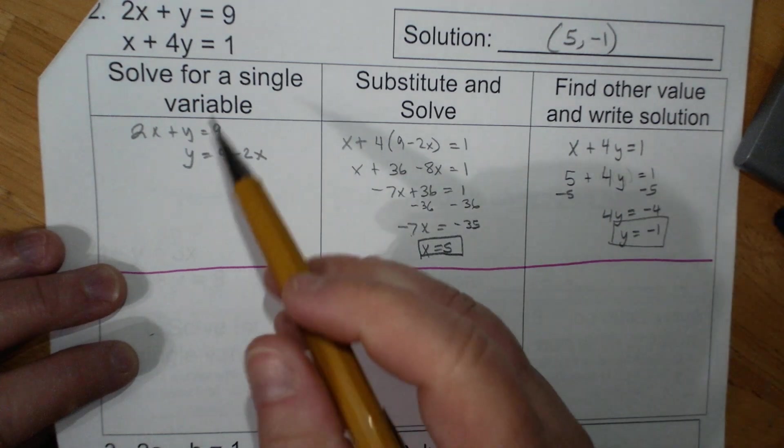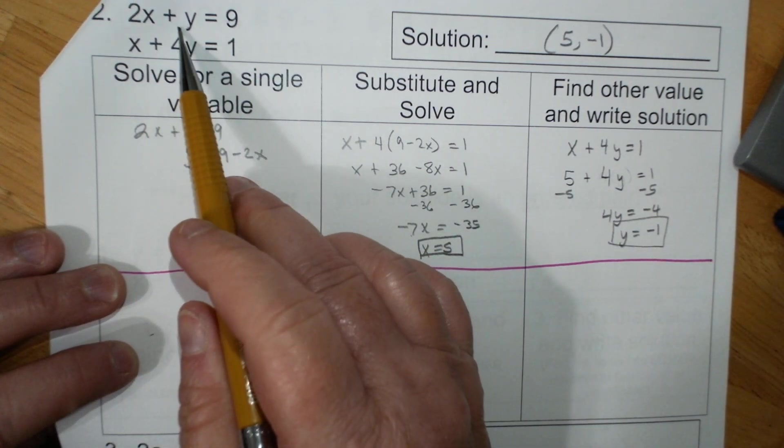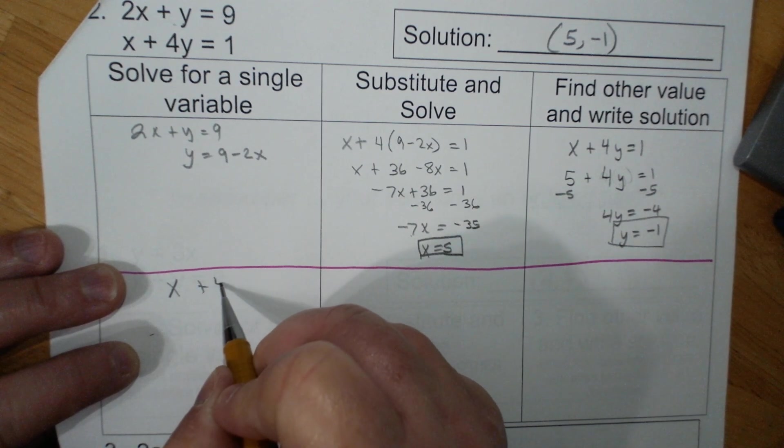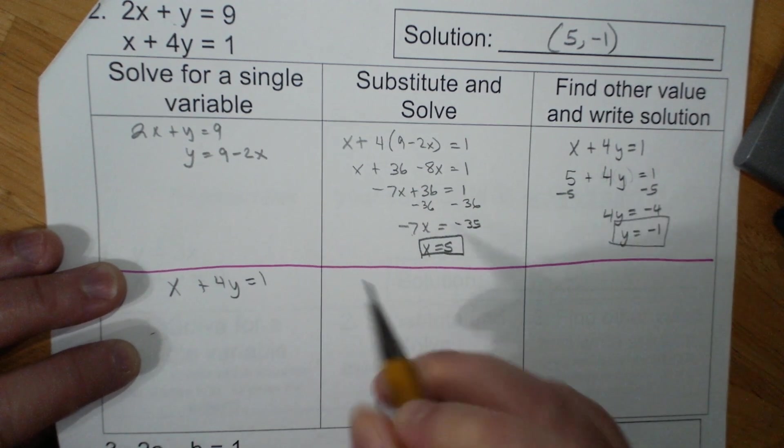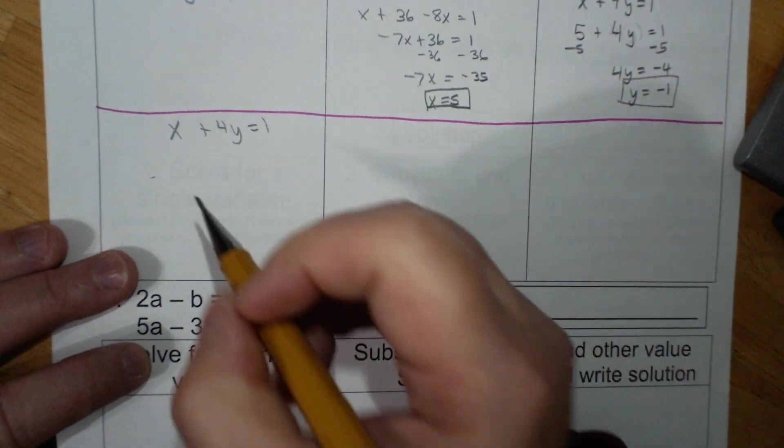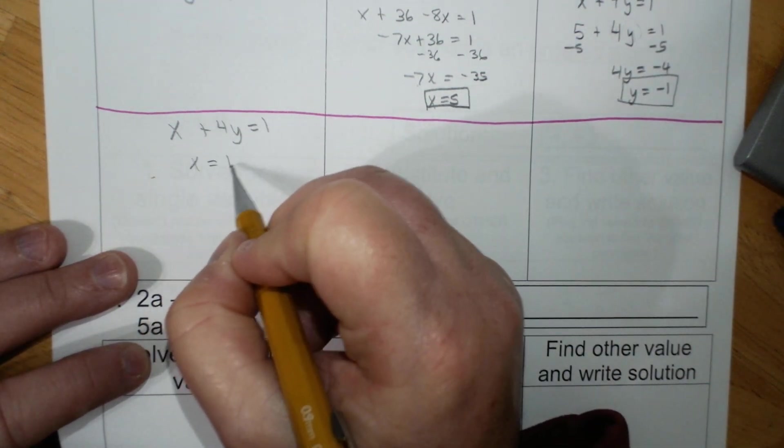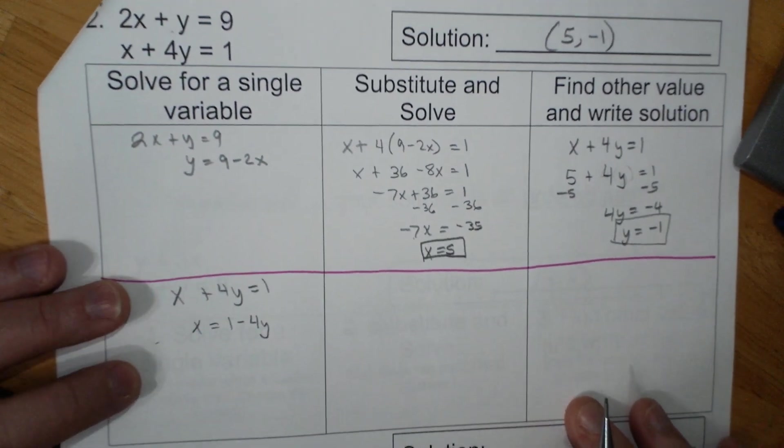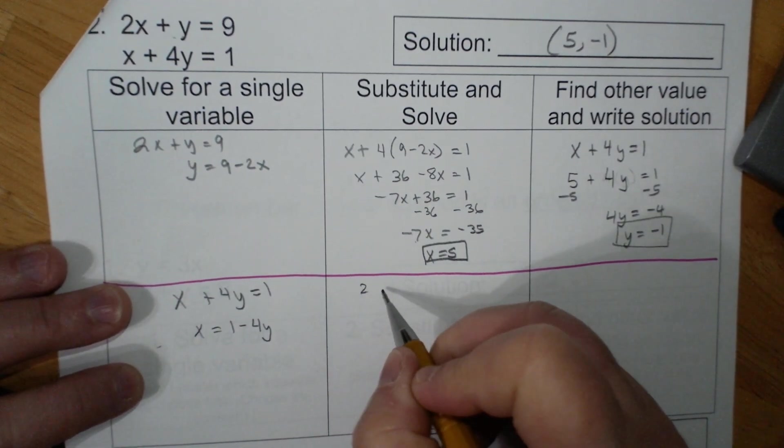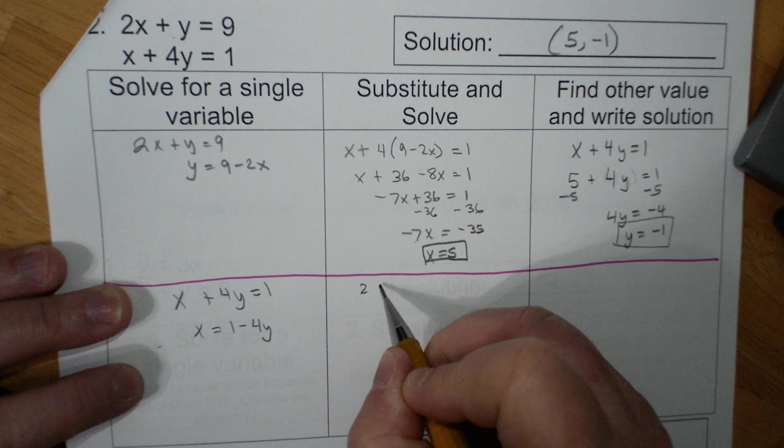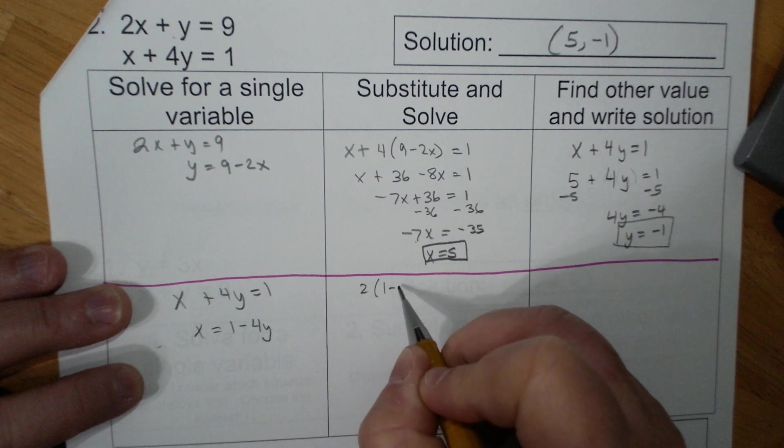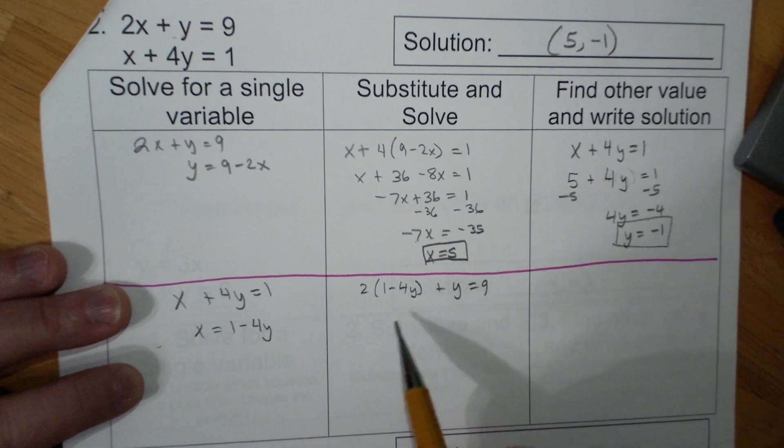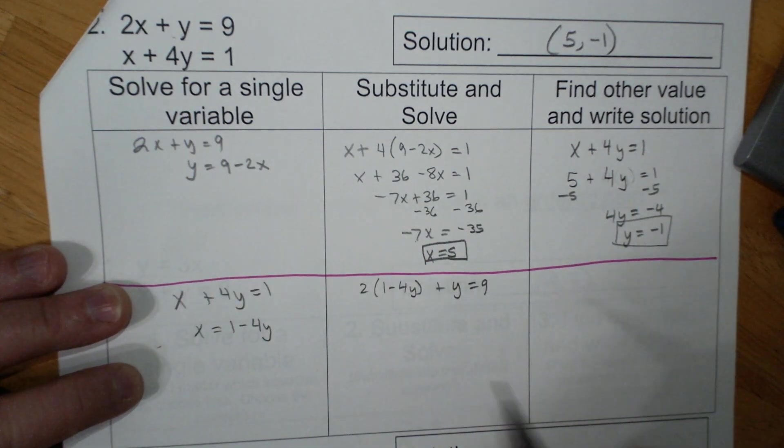So I took this equation and solved for y. I'm now going to take the other equation and solve for x. So x equals 1 minus 4y. I then take 2 times 1 minus 4y plus y equals 9. So I'm plugging into the other equation.